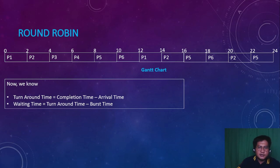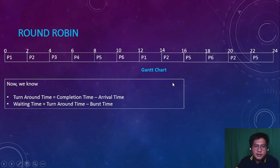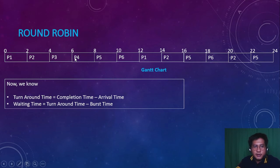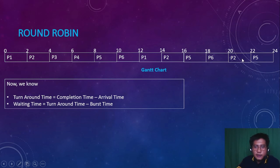For a more detailed explanation, here is the Gantt chart for Round Robin. Since the quantum time is 2, the chart is divided into intervals of 2: 0, 2, 4, 6, 8, 10, 12, 14, 16, 18, 20, 22, and 24. In the first round all processes get two quantum slices: P1, P2, P3, P4, P5, P6. In the second round only P1, P2, P5, and P6 appear. In the third round only P2 and P5 appear.